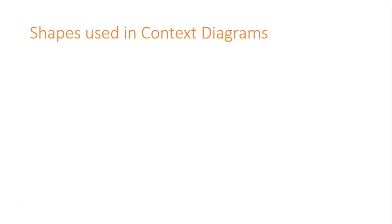So firstly we've got shapes used in a context diagram. And remember a context diagram is used to show a holistic yet simple view of an entire information system.